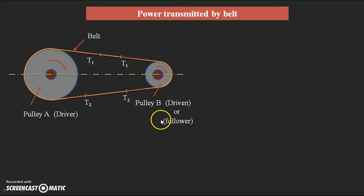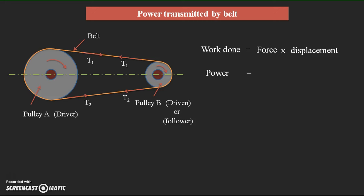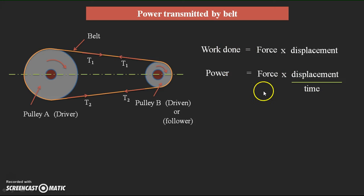For finding the power transmission — power transmitted by the belt — we consider the work done formula. The work done formula is equal to force into displacement. From the same equation, power equals work done per second, which is force into displacement divided by time.